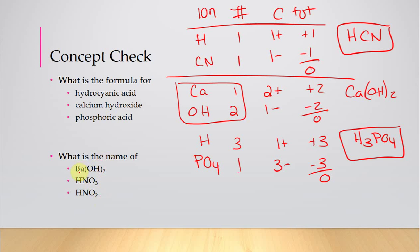Barium is a metal with a polyatomic ion — an ionic compound. Since barium is not a transition metal, we don't need to specify the charge at all, so it's simply barium hydroxide. For HNO₃: it starts with H and contains oxygen, so it's an acid. NO₃⁻ is nitrate, and nitrate becomes nitric acid. For HNO₂: NO₂⁻ is nitrite, and nitrite becomes nitrous acid.